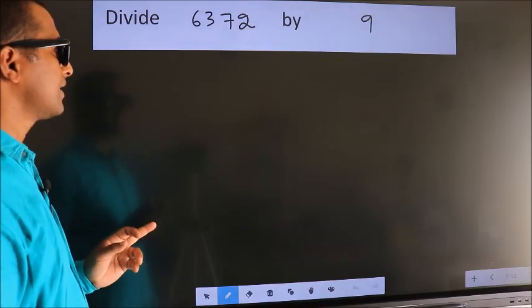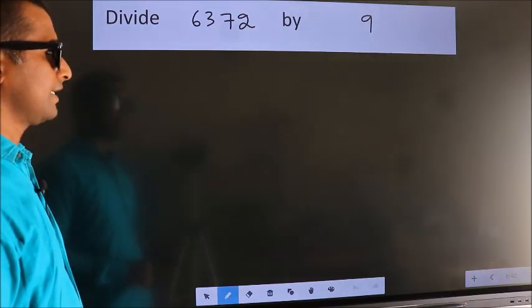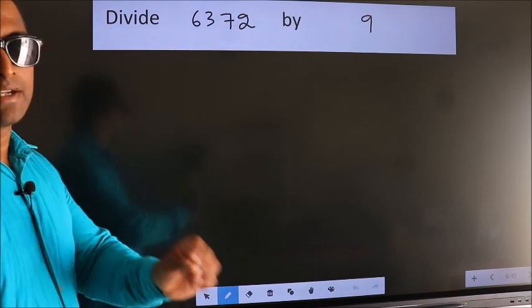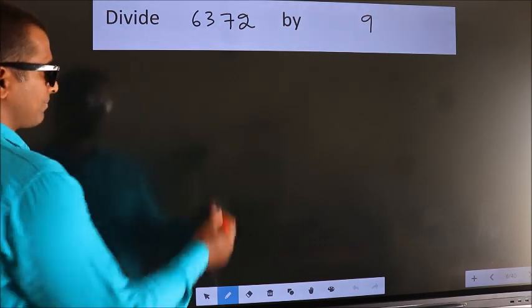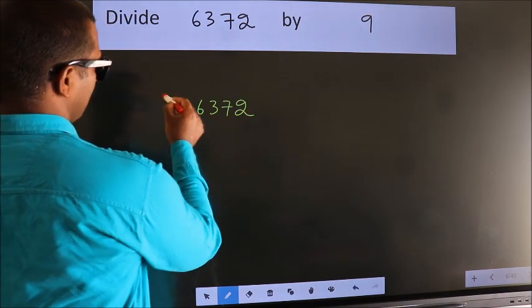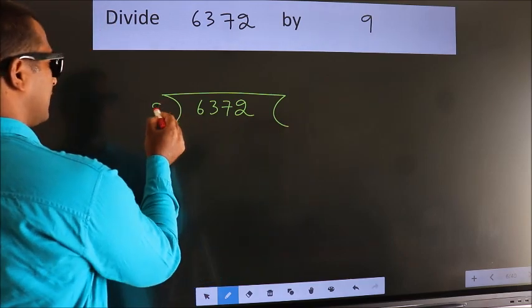Divide 6372 by 9. To do this division, we should frame it in this way. 6372 here, 9 here.